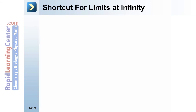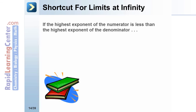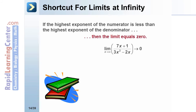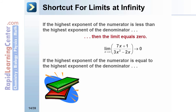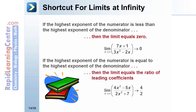There are some shortcuts for limits at infinity. If the highest exponent of the numerator is less than the highest exponent of the denominator, then the limit equals 0 — as in the example we just did, where the numerator has degree 1 and the denominator has degree 2. If the highest exponents are equal, then the limit equals the ratio of the leading coefficients — in our earlier example, 4 divided by 2 equals 2.